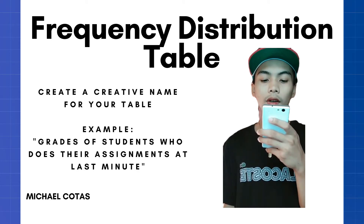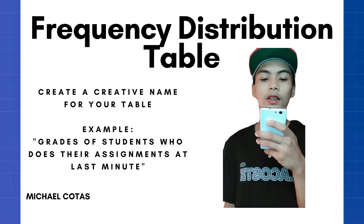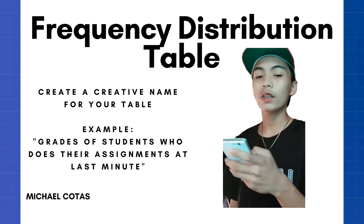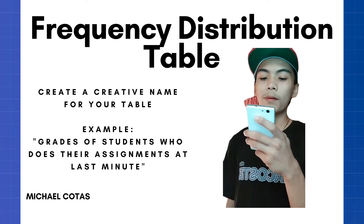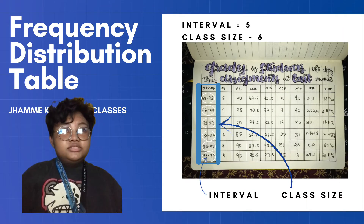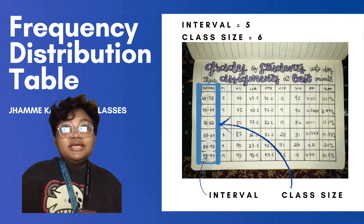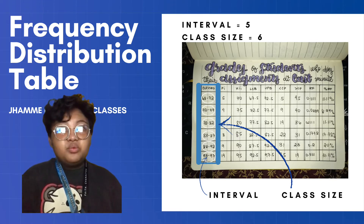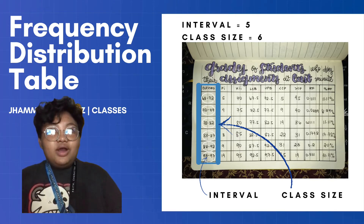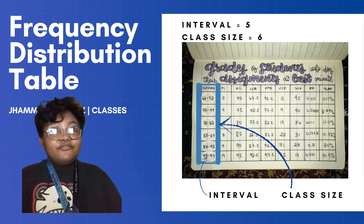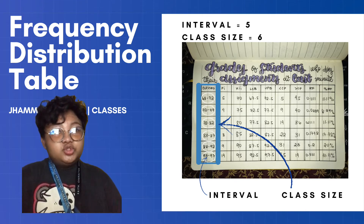After we concluded the most creative name for our frequency distribution table, we can now proceed to the table itself. Our frequency distribution table is a graphic that represents values and the frequency with which they occur. If you have a list of integers that indicate the frequency of a specific result in a sample, it is a handy approach to organize data.